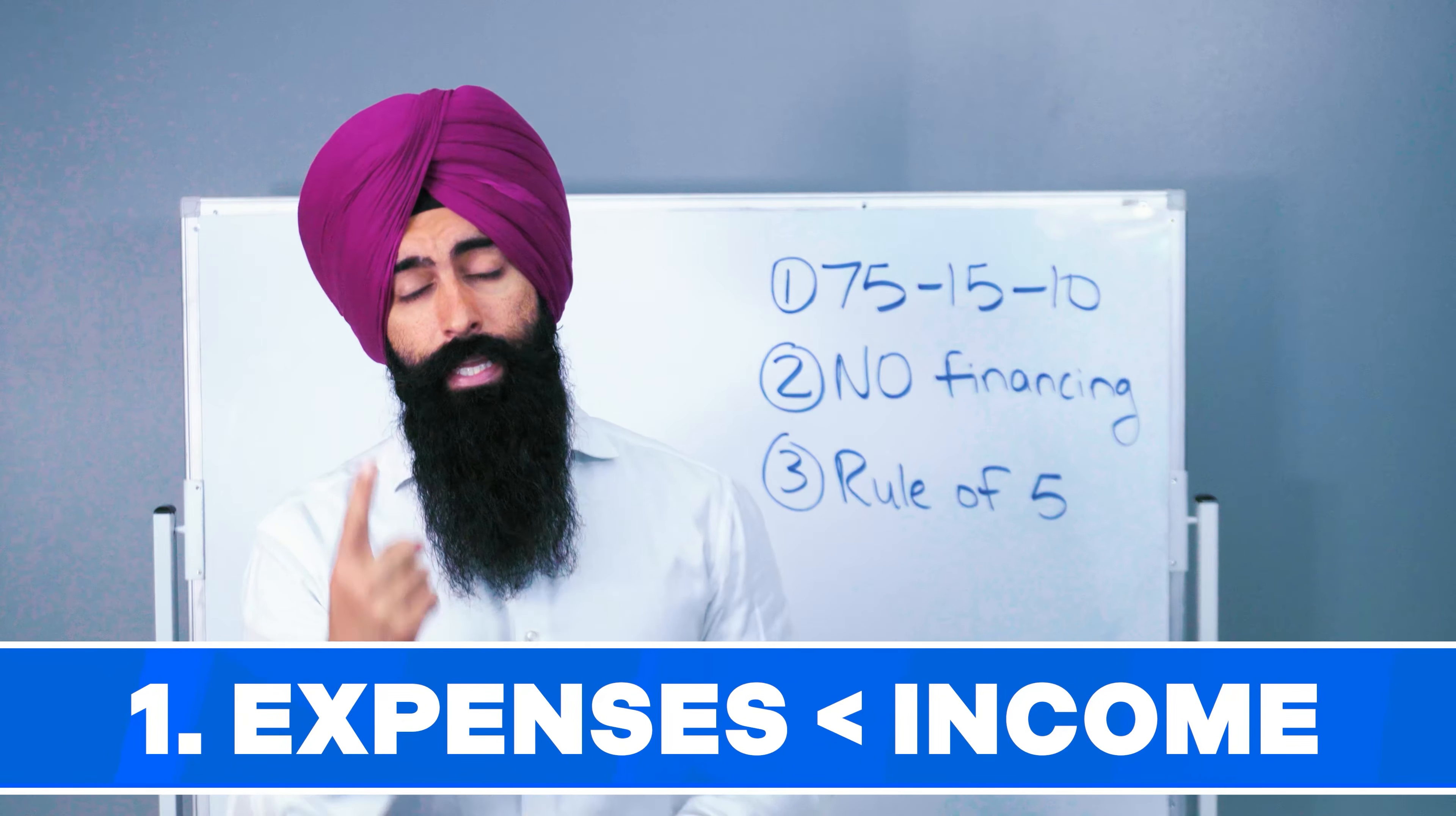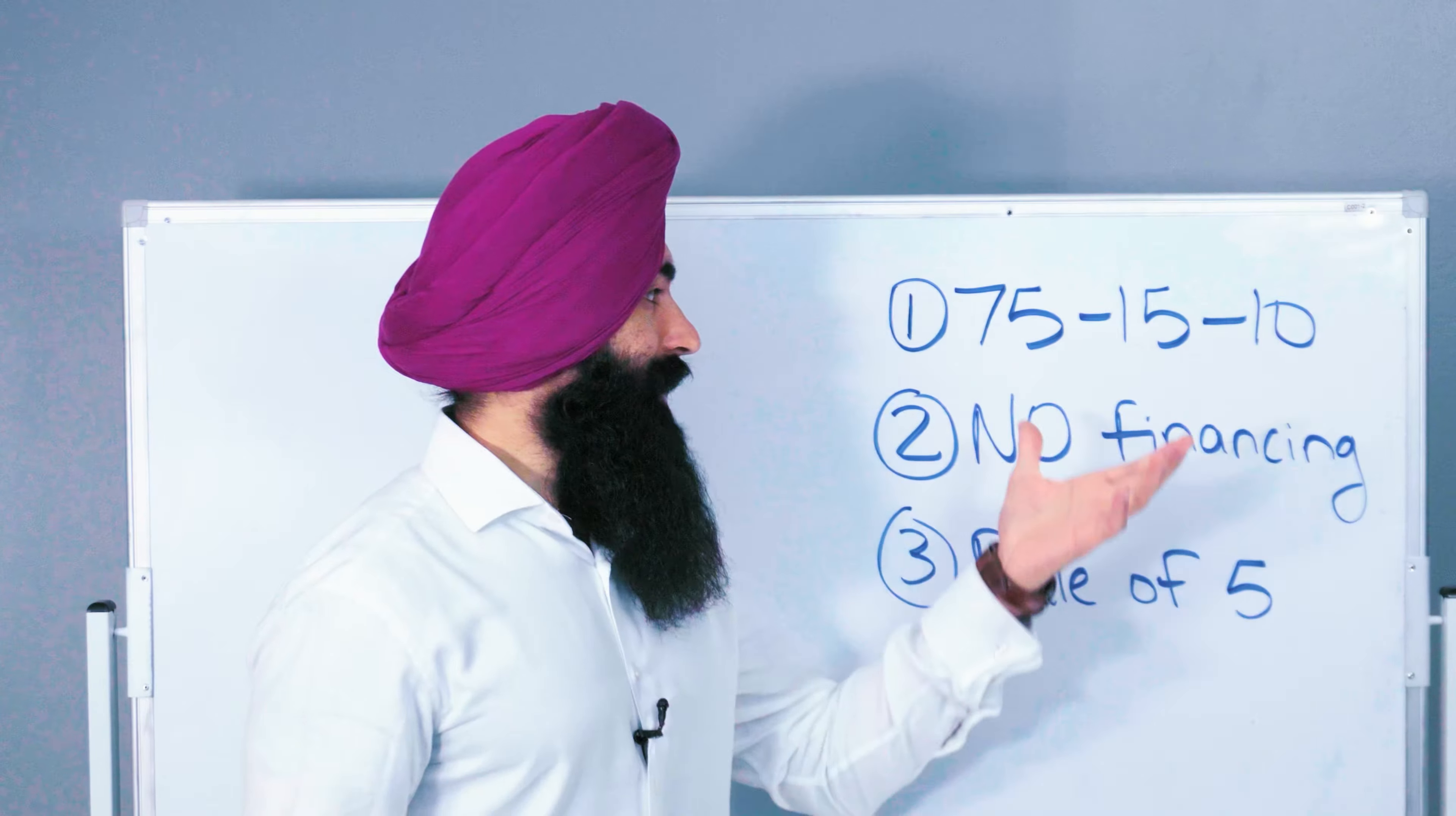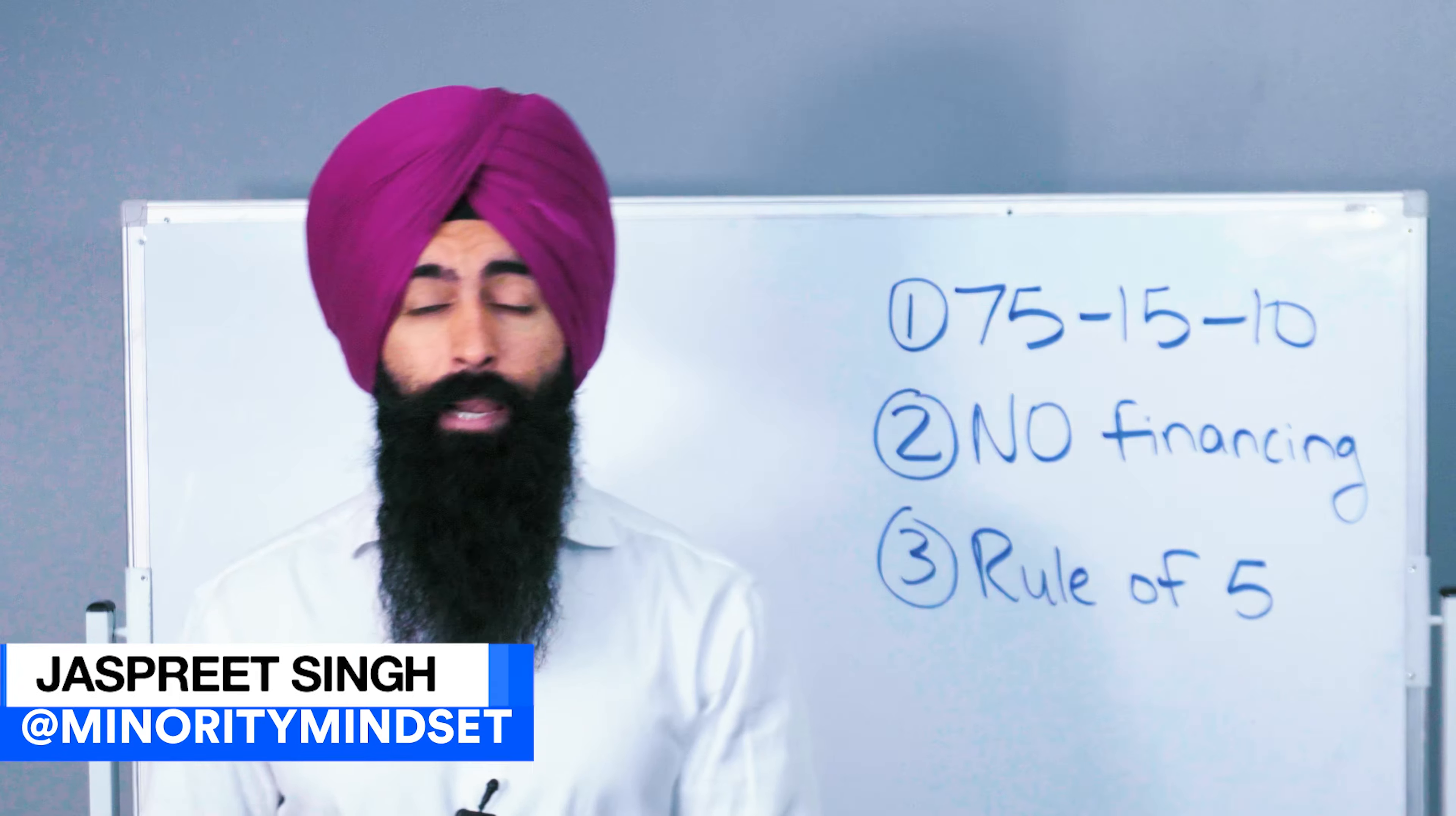There are three things that you got to do. Number one is you got to have a system for your money. I talk a lot about a 75-15-10 plan.